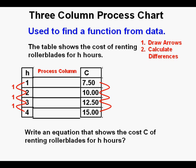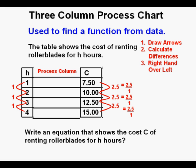The next thing we do is calculate the differences at the arrow tips, subtracting top from bottom. Each one of the differences on the left is 1. On the right or output side, subtracting top from bottom, each one of the differences is 2.5. Then we take the right-hand value over the left-hand value, which for each difference is 2.5 over 1. We calculate the rate of change or slope by dividing 2.5 by 1, which is 2.5 for each difference.